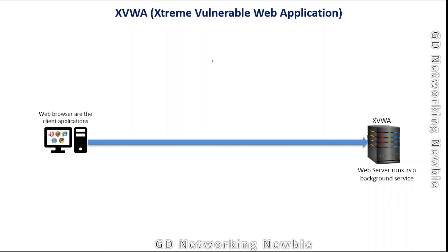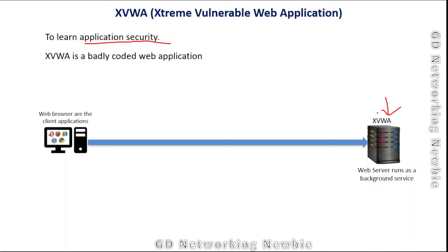Hi everyone. In this video we are going to create a virtual machine that is XVWA, which stands for Extreme Vulnerable Web Application. This is a web application hosted on a specific web server, and we are creating this virtual machine to learn about application security. This web application is badly coded — meaning it is actually vulnerable. There are some vulnerabilities and we will try to explore those using our Kali Linux machine.